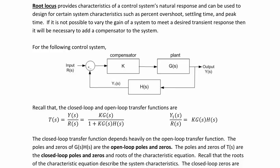For the following control system, we have the input r(s), the output y(s), the compensator k, which is just a simple proportional controller, the plant G(s), and the feedback sensor H(s).